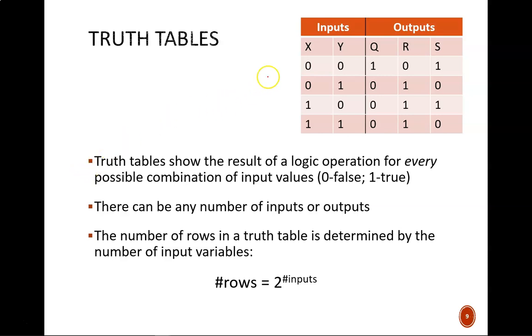Up top we see an example truth table. This one happens to have two input variables and three output variables. A logic operation, and thus a truth table, can have any number of inputs and outputs. Each variable gets its own column in a truth table with inputs in the left section and outputs on the right.